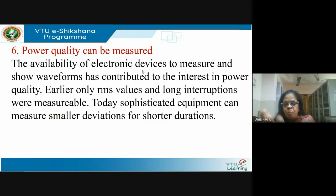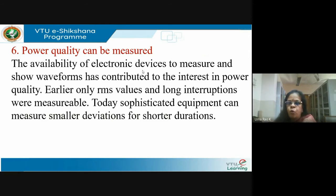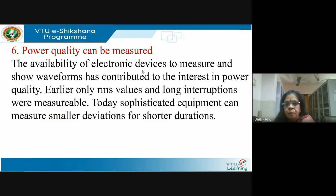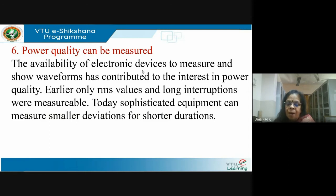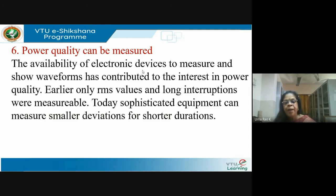Now our definitions have become finer, and so must our measurements. Some of these quantities cannot be directly measured — they are calculated using instant-to-instant sampling. You have a voltage cycle of 20 milliseconds; you take maybe 50 or 60 samples per cycle, then use that data to calculate indices. These indices tell whether the quality is good or bad. All this was not possible earlier, but today we can define and measure power quality very accurately.